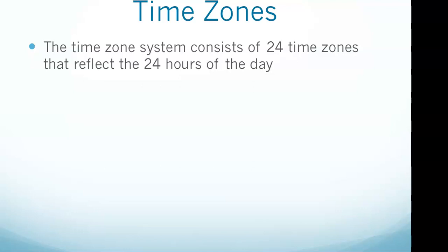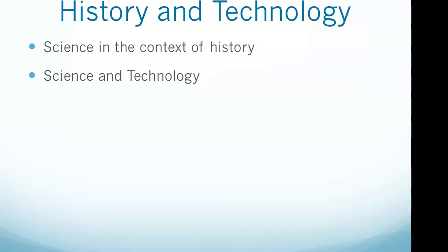With history and technology, science should be taught within the context of history so that students can understand some of the practical applications of what they are learning. For example, science is a big part of tools and technology that were built during the Industrial Revolution. Like what would be an example of that? The steam engine.